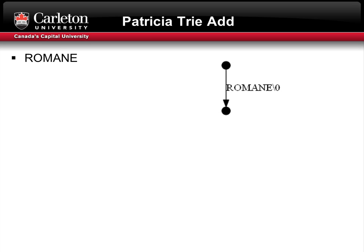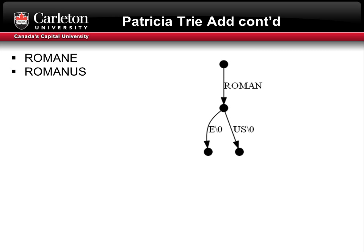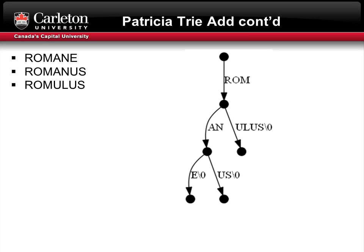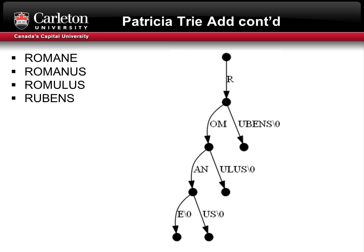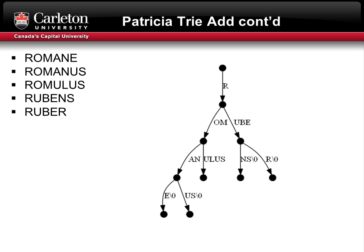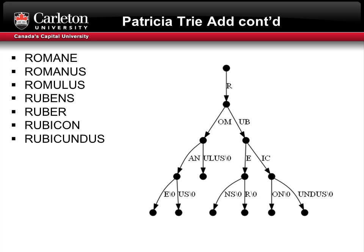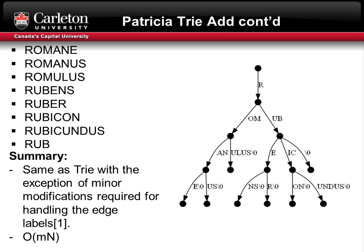The following slides will discuss the add method of the Patricia tree data structure. Instead of each character having an edge, we group the characters into a single edge. In this case, we append the null terminator to the edge to indicate that romaine is a word. Next, I add the word romanus. R-o-m-a-n is common between both words, so we branch off with u-s null terminator, and e with null terminator, indicating romaine and romanus are words. Same process with romulus — r-o-m is common, so we split and have u-l-u-s null terminator. Same steps for rubens, ruber, rubicon, and rubicundus. Lastly, we add the word rub. Rub is already in the tree; the only addition is an edge with a null terminator label to indicate that rub is the word.